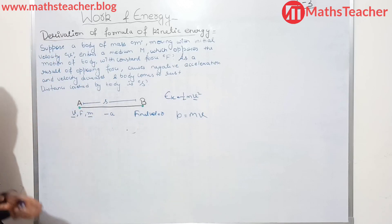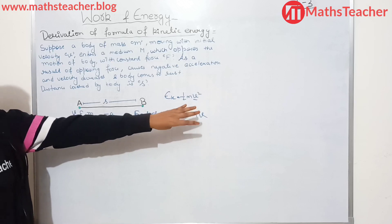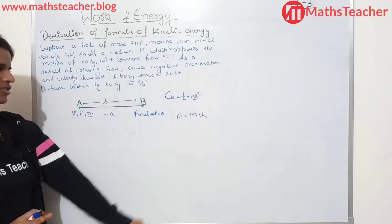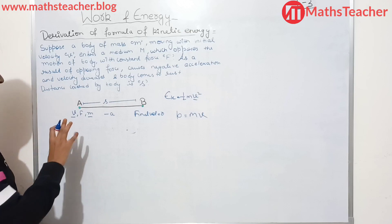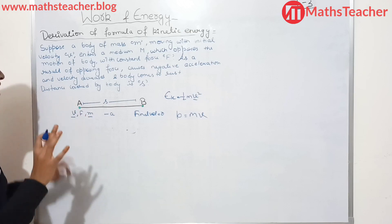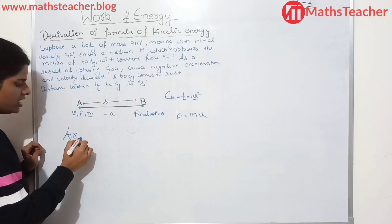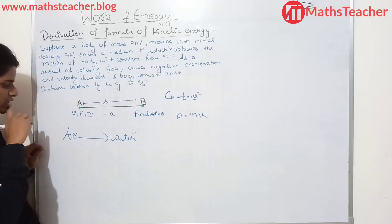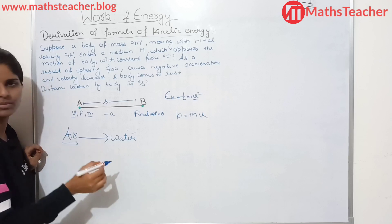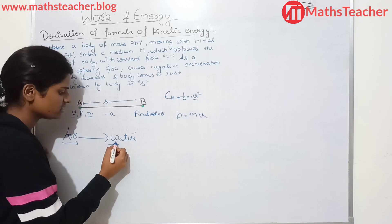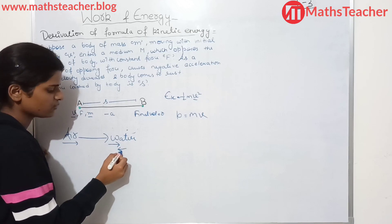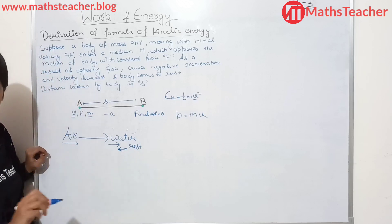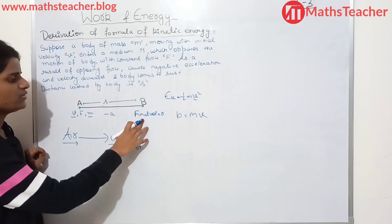When the body enters water, an opposing force acts on it, causing the body to slowly reduce its velocity and come to rest. That is why the final velocity will be zero. Suppose a body of mass M moving with initial velocity V enters some medium which opposes the motion of the body. The body feels a force in the opposite direction, so its motion is hindered and the body slowly stops.